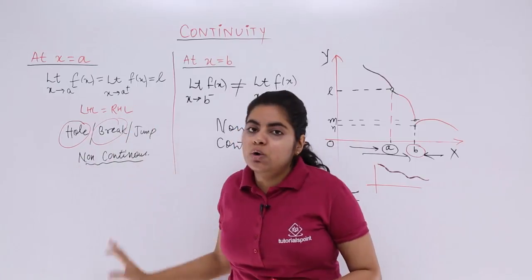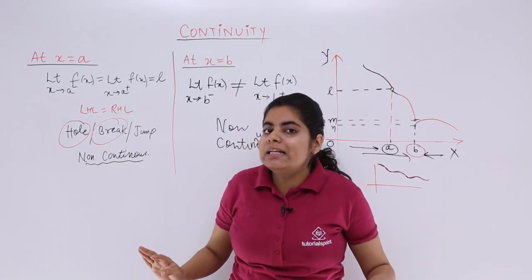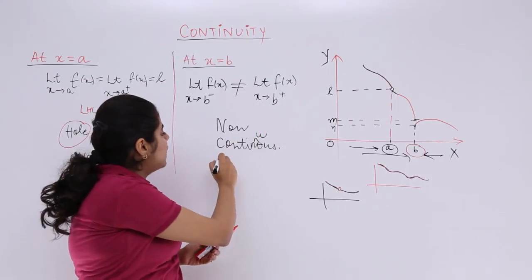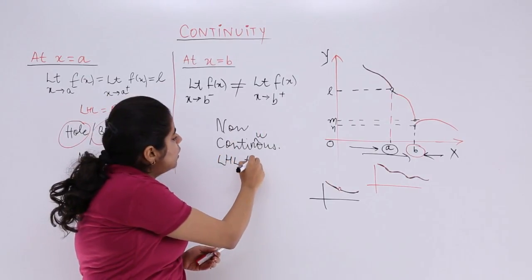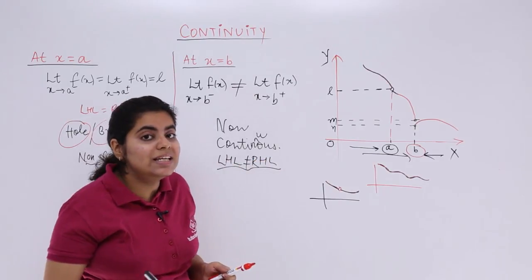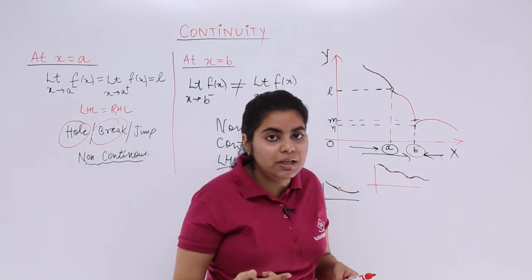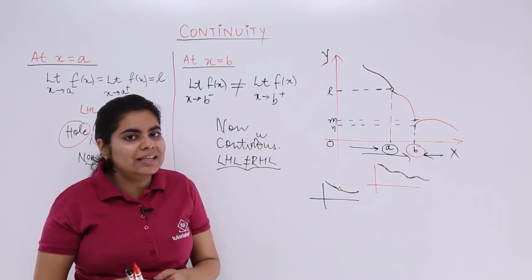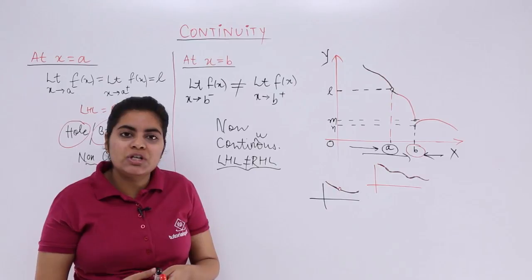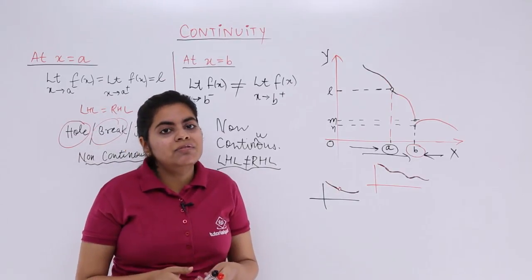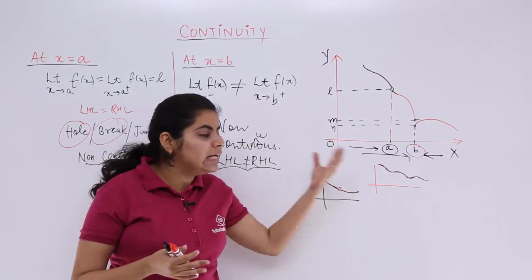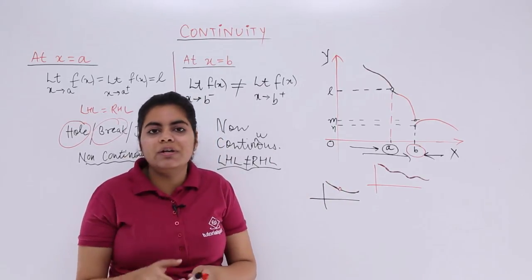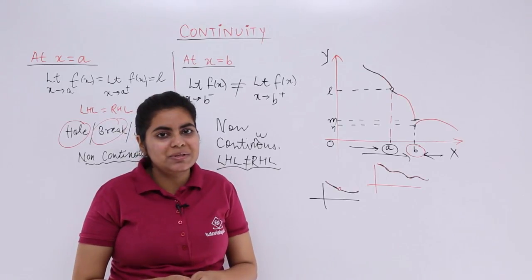These two cases show us: when the limits are equal but there is a hole, the function is not continuous; and when LHL is not equal to RHL, there is also non-continuity. There is one more case of non-continuity — stay tuned for our next videos where we'll study discontinuity in detail. Remember, there is one more case where the function is non-continuous.